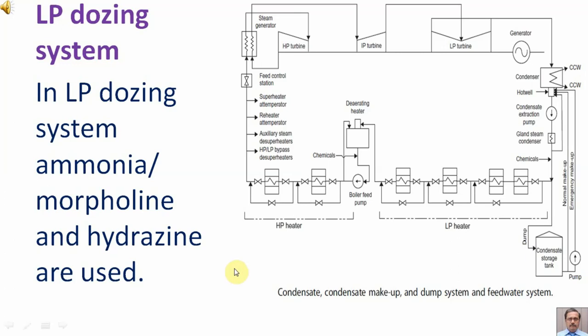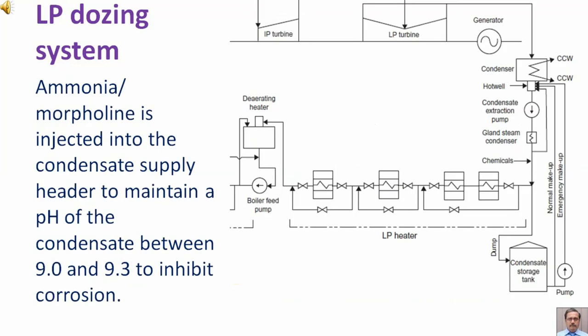In the low pressure dosing system, ammonia, morpholine, and hydrazine are used. Ammonia and morpholine are injected into the condensate supply header to maintain a pH of condensate between 9 and 9.3 to inhibit corrosion.